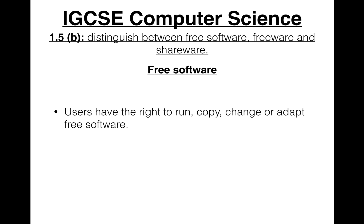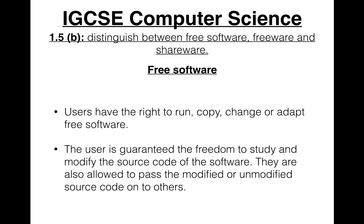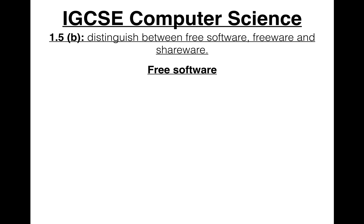In free software, users have the right to run, copy, change, or adapt it. The user is guaranteed the freedom to study and modify the source code of the software, and they are also allowed to pass modified or unmodified source code on to others, and use source code in their own programs as well.